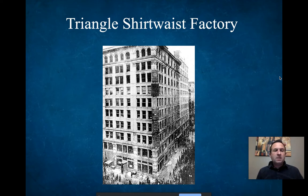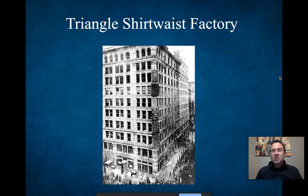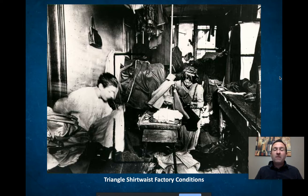A shirtwaist is women's blouses — fancy looking shirts for women, what teachers often wear. Like most factories of the era, this was a decrepit, horrible place to work: long hours, low pay, poor working conditions. On those three floors — the 8th, 9th, and 10th — right around 500 people worked there, mostly young immigrant women. These women worked usually nine hours on weekdays plus a seven-hour day on Saturday, for a total of 52 hours on average.